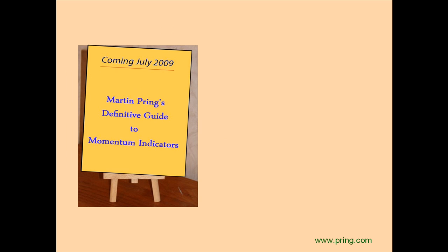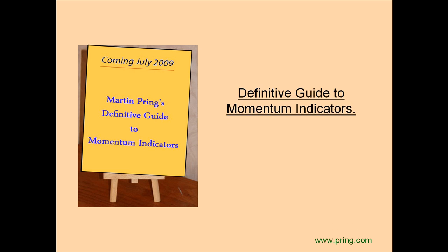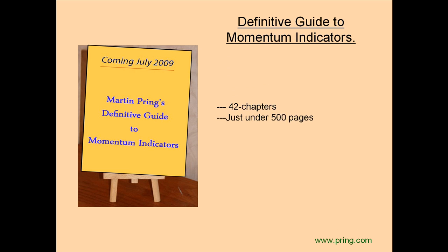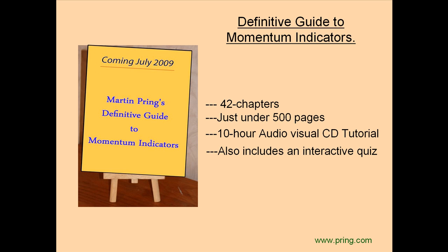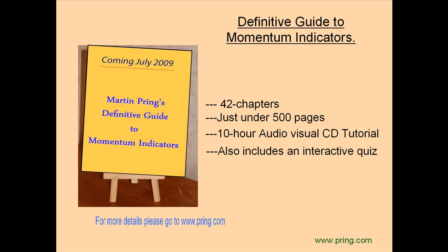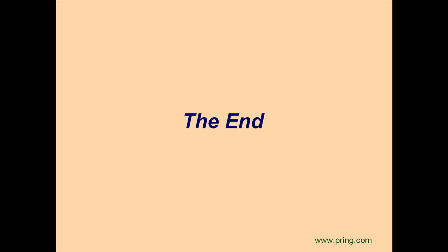If you'd like to watch and read a much more in-depth explanation of a multitude of momentum indicators, including the RSI, MACD, and stochastics, then you will profit from my definitive guide to momentum indicators — a 42-chapter, just under 500-page workbook and CD combination. This package comes complete with a 10-hour audio-visual tutorial, as well as an interactive quiz so you can test your own knowledge. Details of this and our other tutorial DVDs, newsletters, seminars, and conservative money management programs can be found at our website at pring.com. In the meantime, good luck and good charting.